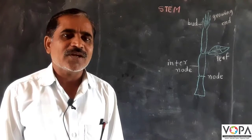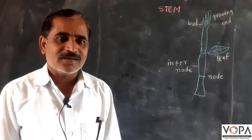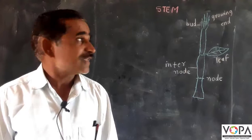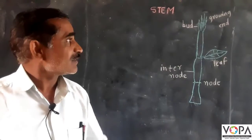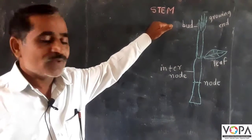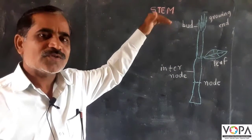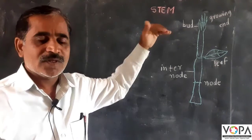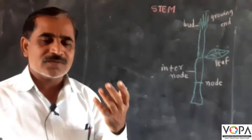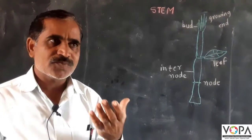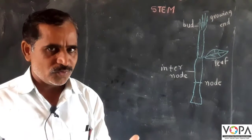Students, we are going to learn the part of the plant — the stem. The stem grows above the soil. The stem grows from the sprouting of the seed, called the plumule.